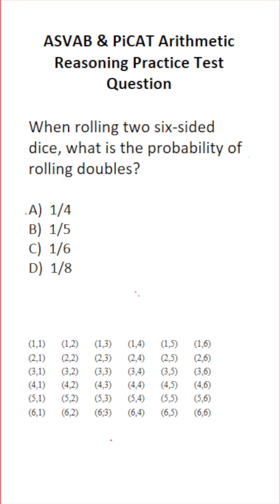This arithmetic reasoning practice test question for the ASVAB and PiCAT says, when rolling two six-sided dice, what is the probability of rolling doubles?